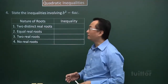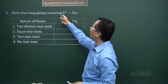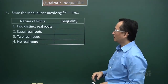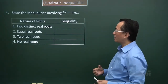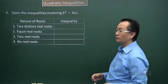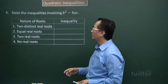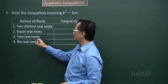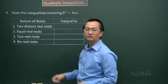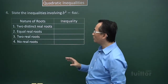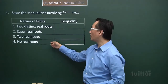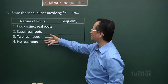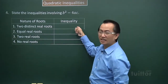For point 4, we want to state the inequalities involving b squared minus 4ac. There are ways to describe the nature of roots — meaning whether you have two distinct real roots, equal real roots, two real roots, or no real roots. We must be able to associate these phrases with a certain inequality involving the discriminant.